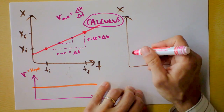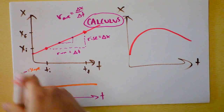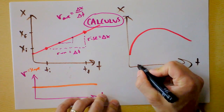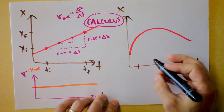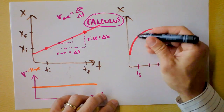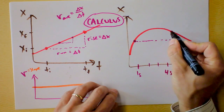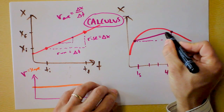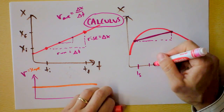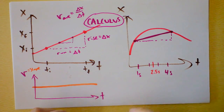What if we have something more interesting happening — a curved position as a function of time? I deliberately didn't make it symmetric. Let's say I want to know the velocity between one second and four seconds. I can draw rise and run between those points and connect them to find the slope of that line. But that's not necessarily the velocity at exactly 2.5 seconds.